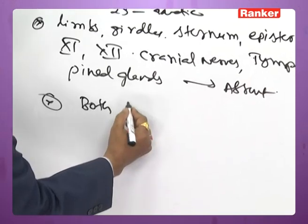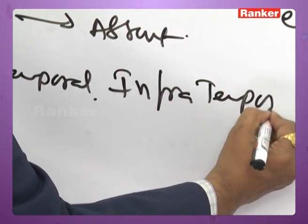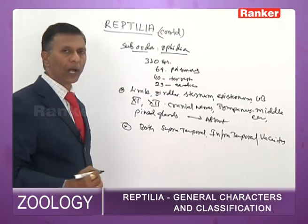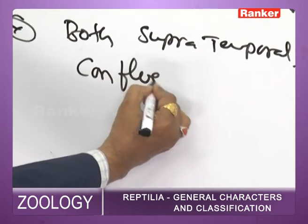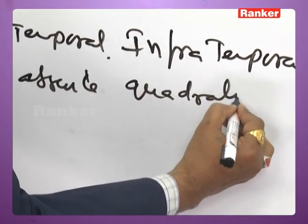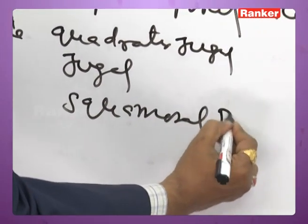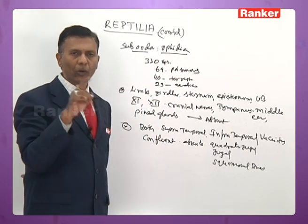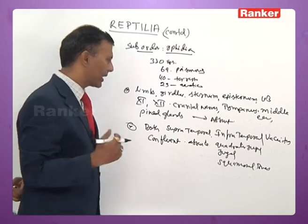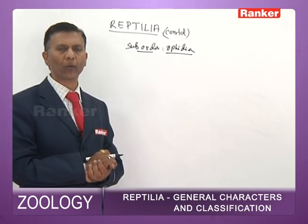In snakes, both the supratemporal and infratemporal vacuities are confluent due to the absence of the quadratojugal, jugal, and squamosal bones. This allows snakes to swallow prey much larger than their own body size.